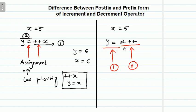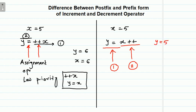The assignment operator has very low priority among all the operators we have studied, but postfix form has even lower priority than the assignment operator. So here, what will be your result? Y will be 5, because first the value of x gets assigned to y, and then after, x gets incremented.